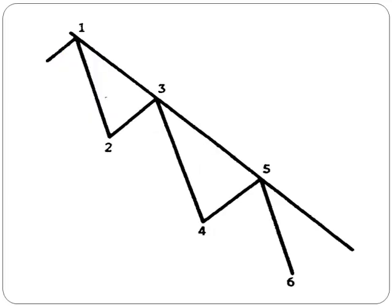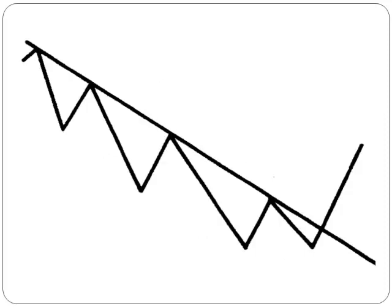Here is an example of a downtrend line. The tentative downtrend line needs two points at 1 and 3, and a third test, point 0.5, to confirm its validity. A break above the trend line indicates a trend reversal.